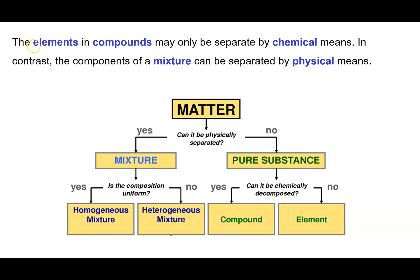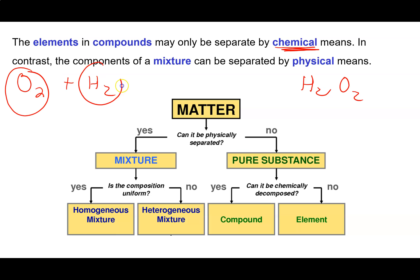It's important to recognise that the atoms or elements that are present in compounds can only be separated from each other by chemical means. That is, you have to break the connections — break the bonds between the atoms — in order to separate out these different types of elements. In contrast, the different bits that make up a mixture can be separated by physical means. So there's a very big difference between a mixture of oxygen and hydrogen, and H2O2. In a mixture, the oxygen and hydrogen atoms aren't bound to one another and could be separated physically, whereas in hydrogen peroxide, H2O2, the atoms are actually connected and the only way to separate them would be by breaking the bonds.